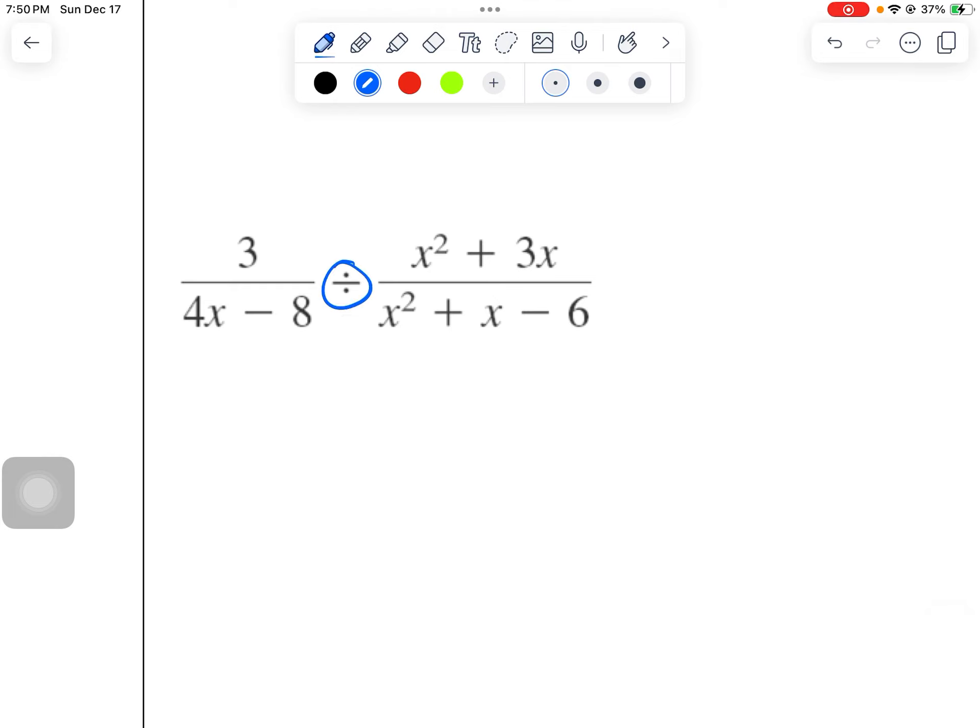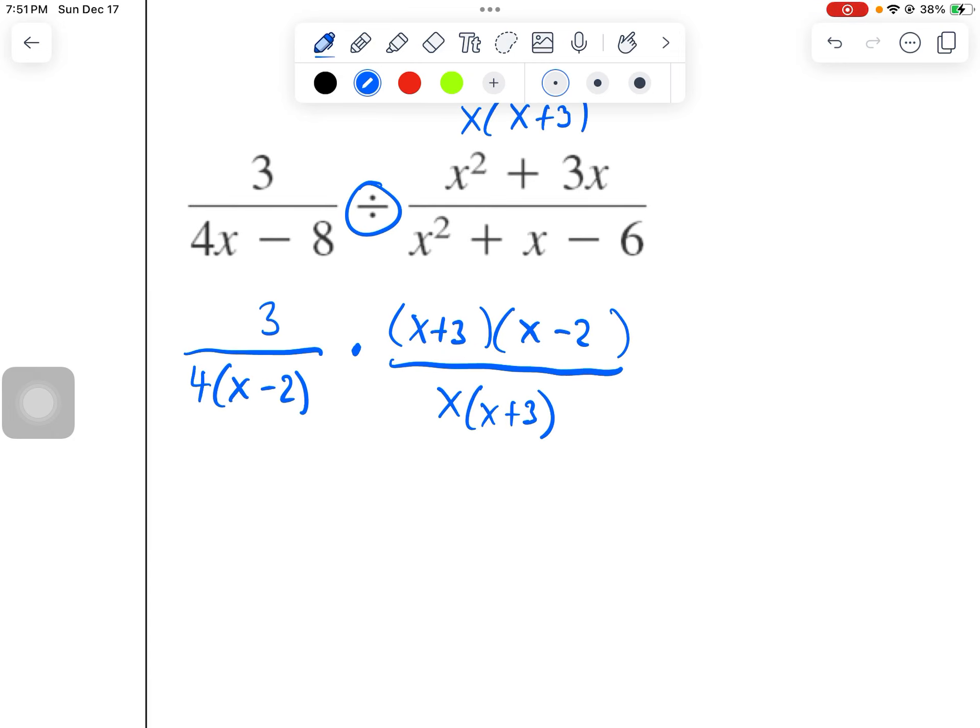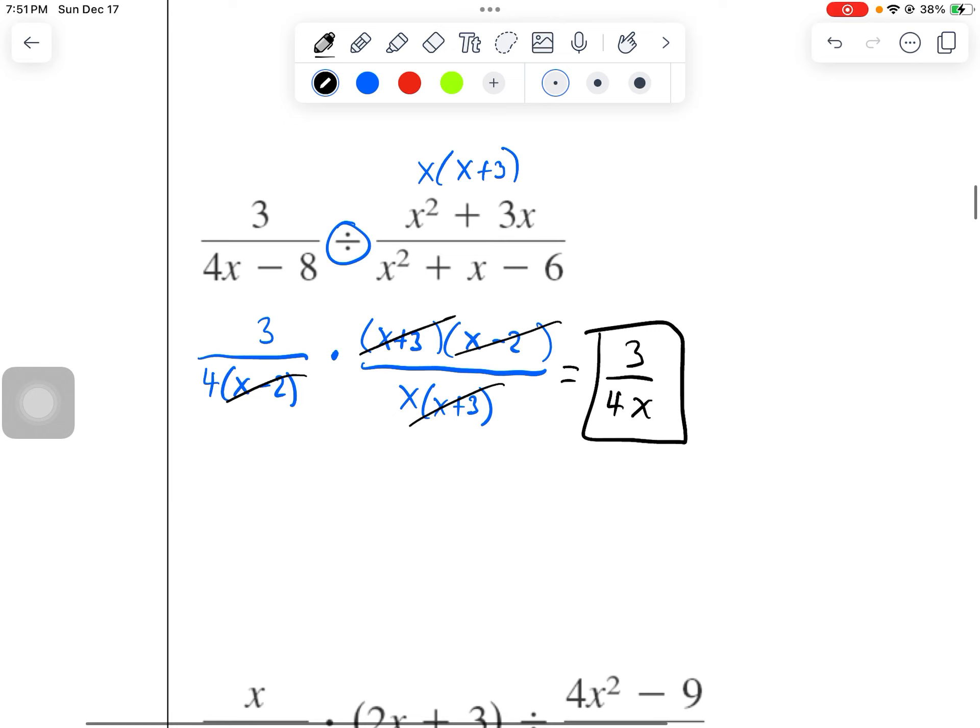Here we have another division problem. I'm going to first factor this one, so I can take a 4 out of 4x and 8. Always look for that greatest common factor. Change it to multiplication. And now I'm just going to do some factoring along the way. I know that x squared plus x minus 6, factors of 6 that have a difference of 1 are 3 and 2. So I'm going to go with x plus 3 and x minus 2. Now this top part factors into x times x plus 3. And now I'm just looking for stuff that I can cross off. I have an x plus 3 on the top and the bottom. I got an x minus 2 here and here. And then we're going to be left with 3 over 4x.